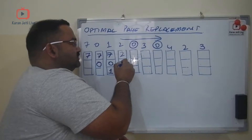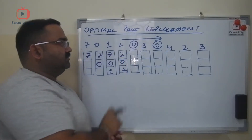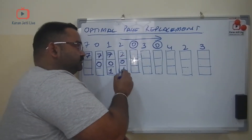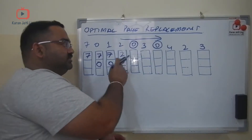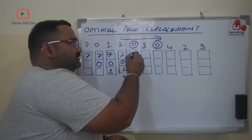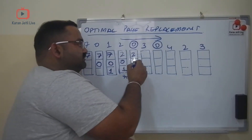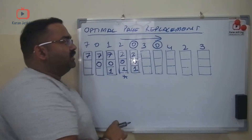So the cache becomes: 2, 0, 1. Then we need zero again — zero is already there, so the cache remains 2, 0, 1.